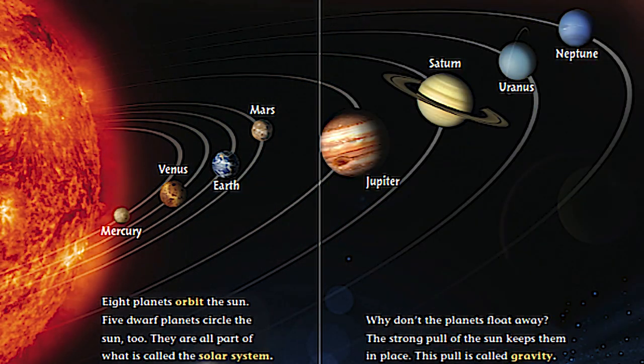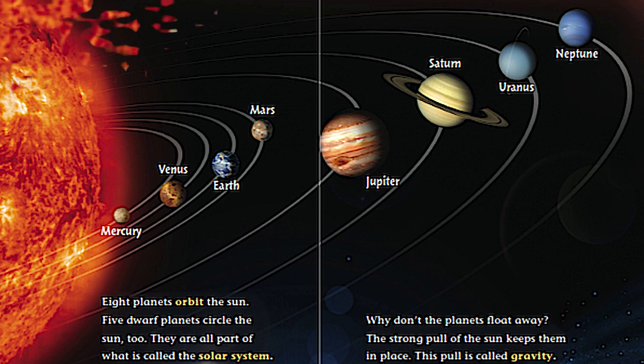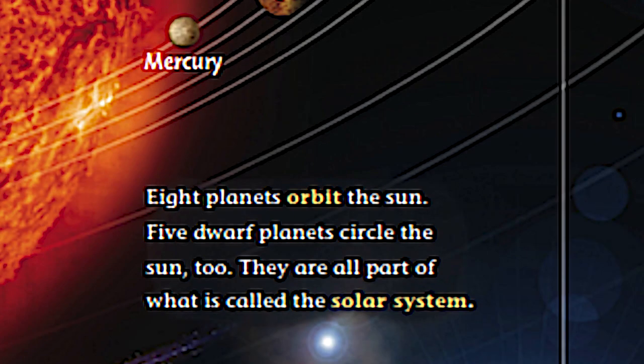Take a look at this beautiful picture. How many planets do you see in front of you? Can you count them? That's right. Eight planets. Eight planets orbit the sun. Five dwarf planets circle the sun too. Look at that word dwarf. D-W-A-R-F. Dwarf means small. They are all part of what is called the solar system.